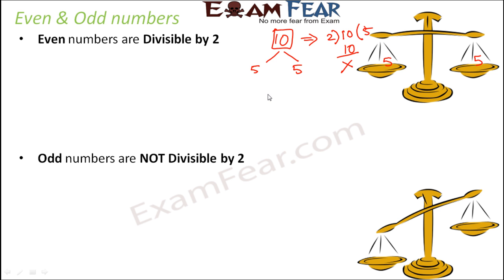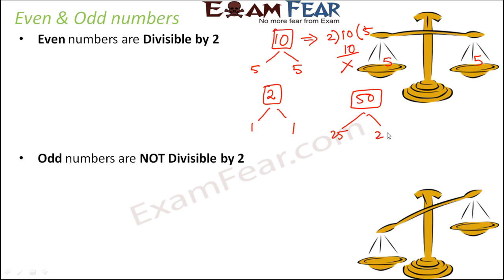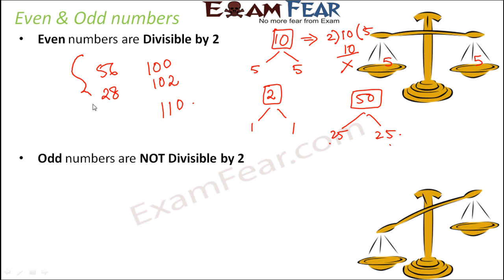Similarly, the number 2 can be divided into two equal parts: 1 and 1. The number 50 can also be divided into two equal parts: 25 and 25, since 25 plus 25 is 50. So basically, all even numbers are divisible by 2. Examples of even numbers include 56, 28, 100, 102, and 110 — these are all even numbers because they are divisible by 2.